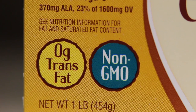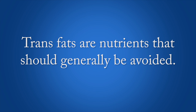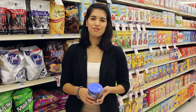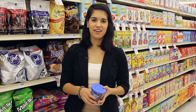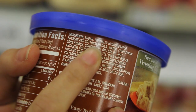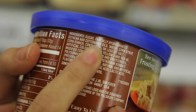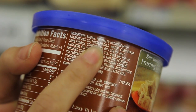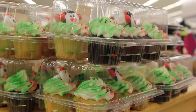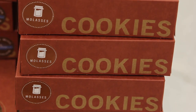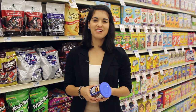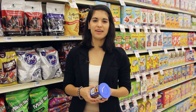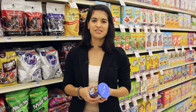Like saturated fat, trans fats also have a straight, rigid structure that can cause hardening of the blood vessels. Trans fats are nutrients that should generally be avoided. To know if a food contains trans fat, look at the ingredients list on the food label. A food will contain trans fat if it has partially hydrogenated oils in the ingredients list. Examples include commercially made foods like pastries, cakes, pie crusts, cookies, margarine, and shortening. The U.S. dietary guidelines recommend that Americans consume as little trans fat as possible.